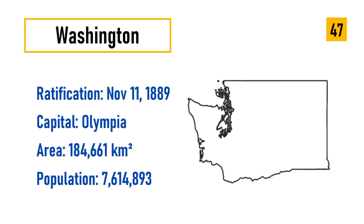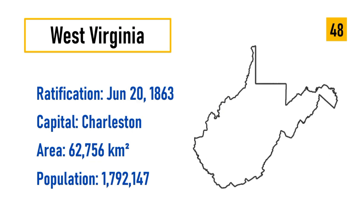Number 47: Washington, ratification November 11, 1889, capital Olympia, area 184,661 square kilometers, population 7,614,893. Number 48: West Virginia, ratification June 20, 1863, capital Charleston, area 62,756 square kilometers, population 1,792,147.